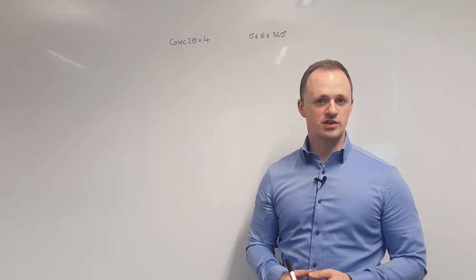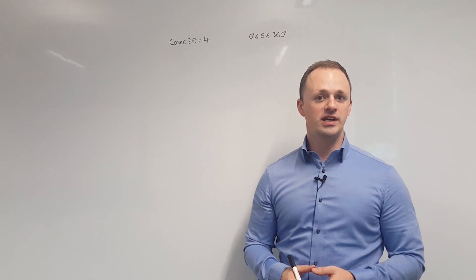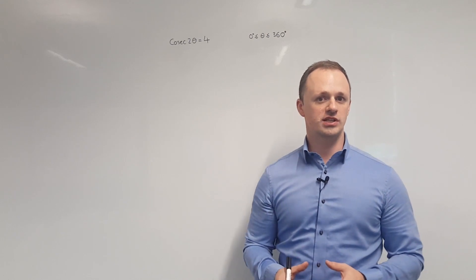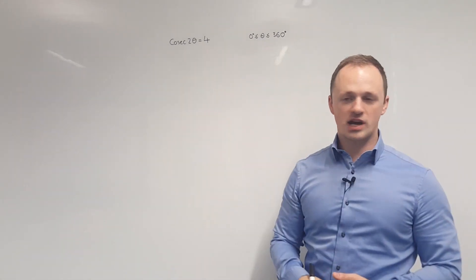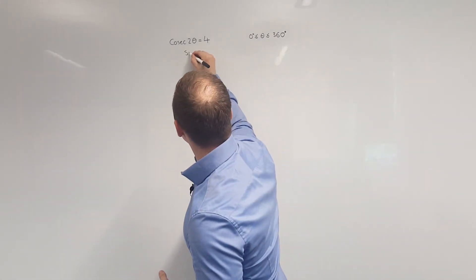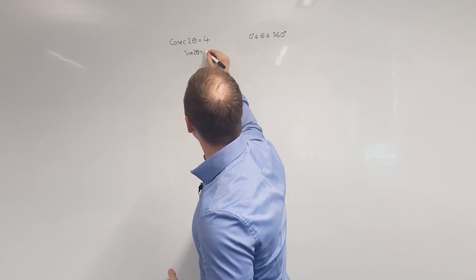In this example, we're going to be solving the equation cosec 2θ equals 4 in the region 0 to 360 degrees. First of all, we start by taking the reciprocal of both sides here to get sine 2θ equals 1 quarter.